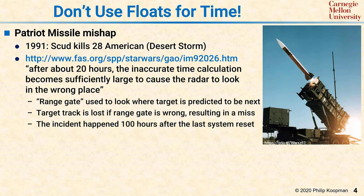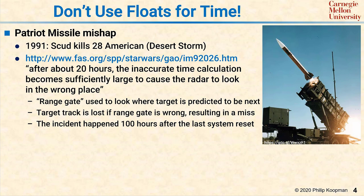That means when the Patriot missile interceptor was launched, it was pointing and guided to the wrong place and missed hitting the incoming Scud. A range gate was used to look at where the target is projected to be next, and the target track is lost if the range gate is wrong, resulting in a miss. Let's switch to a picture of what happened, and then we'll come back to this slide.